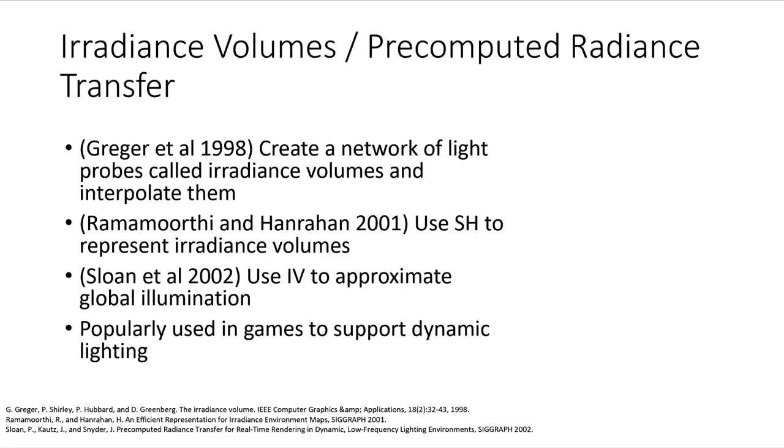Next we look at irradiance volumes and pre-computed radiance transfer. Gregor and others introduced the interpolation of irradiance volumes that enclose surface points. Ramamorti and Hanrahan used spherical harmonics to represent these, and Sloan and others worked on the idea that you could separate the visibility of a surface point with the light probe itself. The visibility is a spherical harmonic, and the irradiance volume is a spherical harmonic, and we can convolve them by multiplying the coefficients together. In this way, we can separate the real-time lighting from the visibility function. So, irradiance volumes are very popular in game engines, and usually we bake those visibility spherical harmonics into the scene geometry. However, irradiance volumes are good for the dynamic lighting of moving objects.